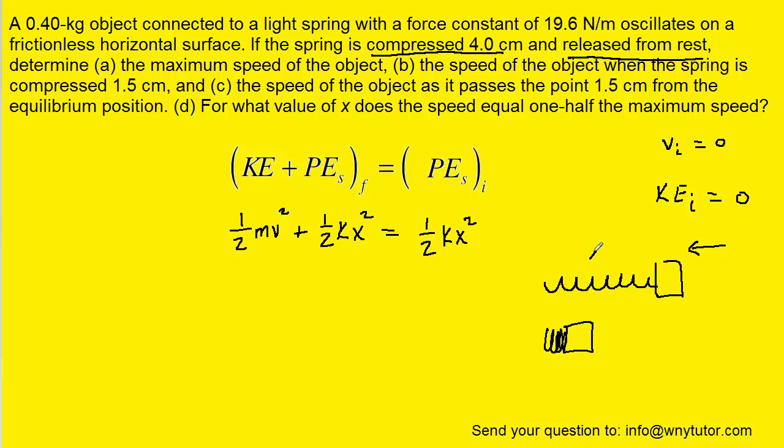then the distance that the spring was compressed would represent what is known as the amplitude. It's the maximum compression of the spring, so initially when the spring is in its maximally compressed state we can substitute in A for this x, and again just note that A is equal to four centimeters.